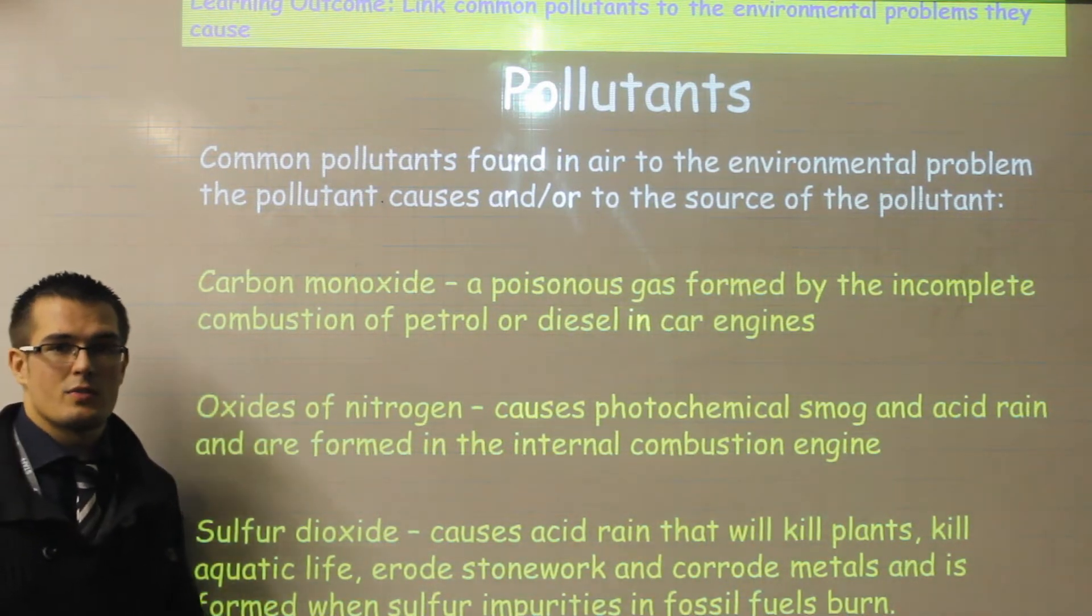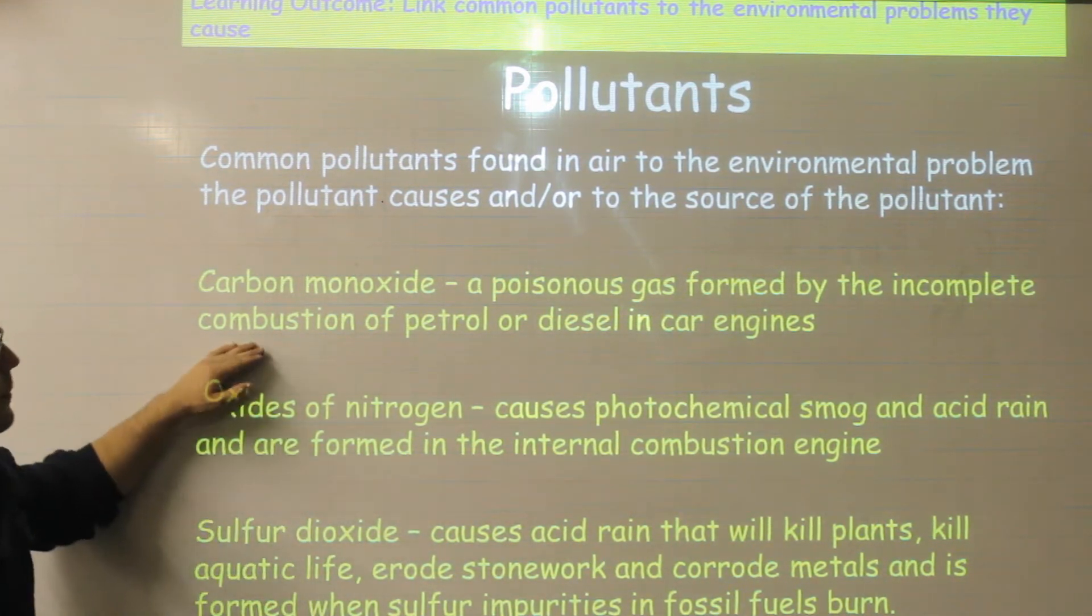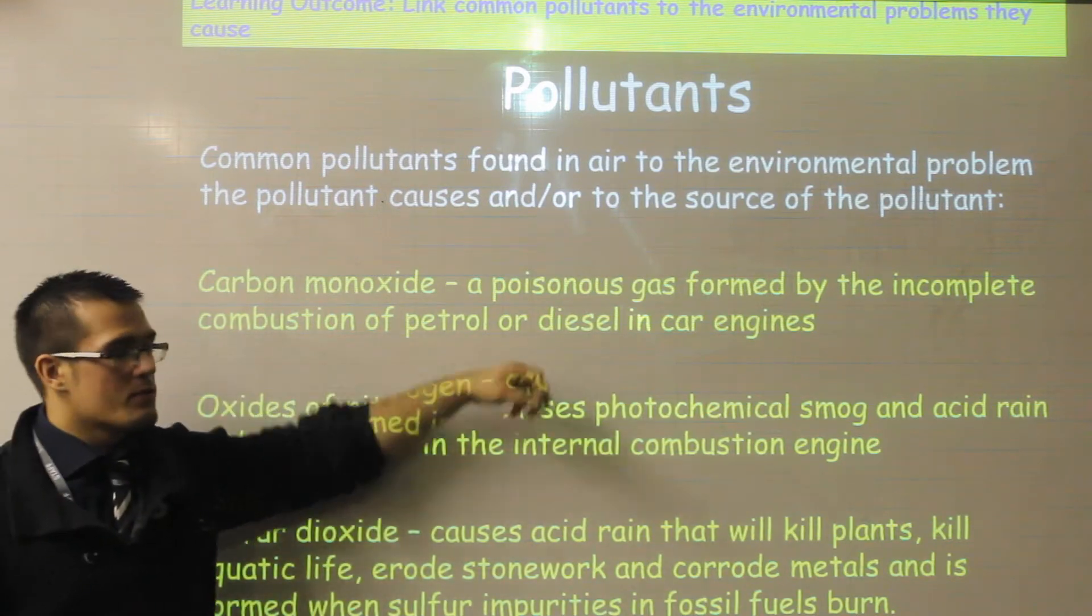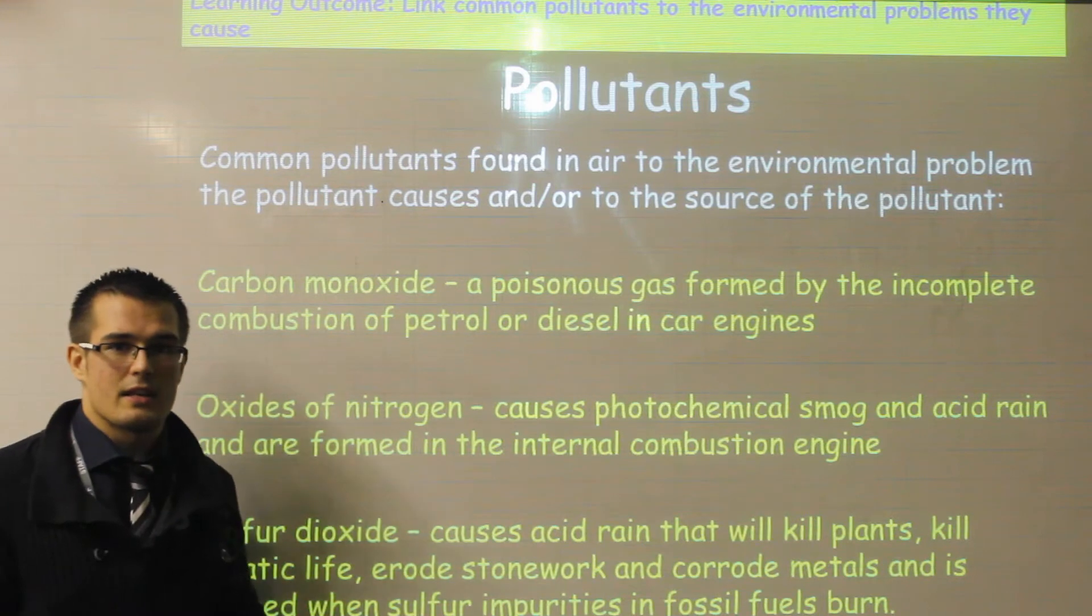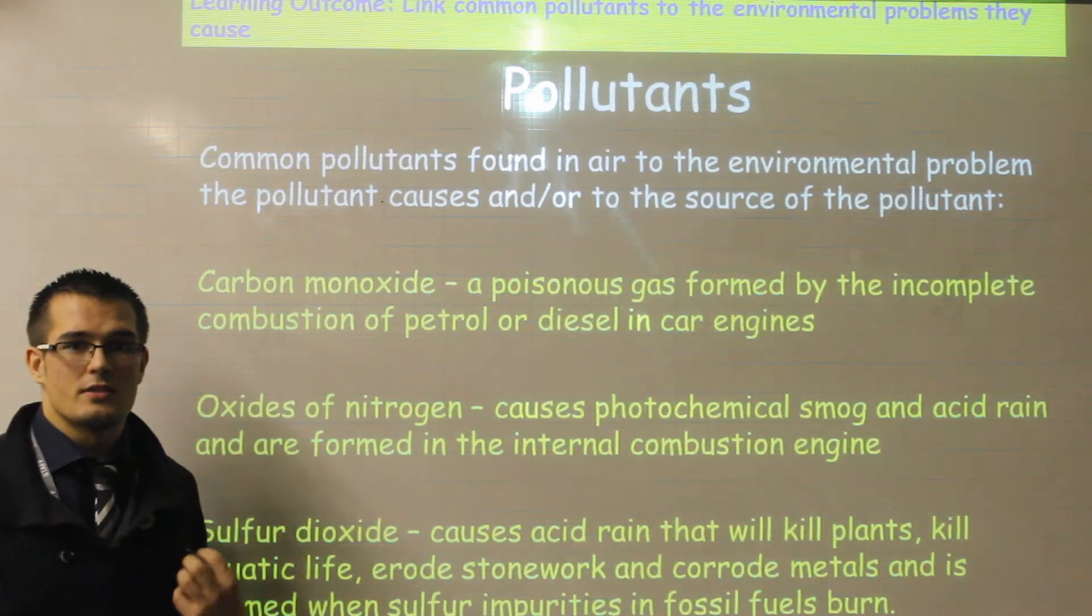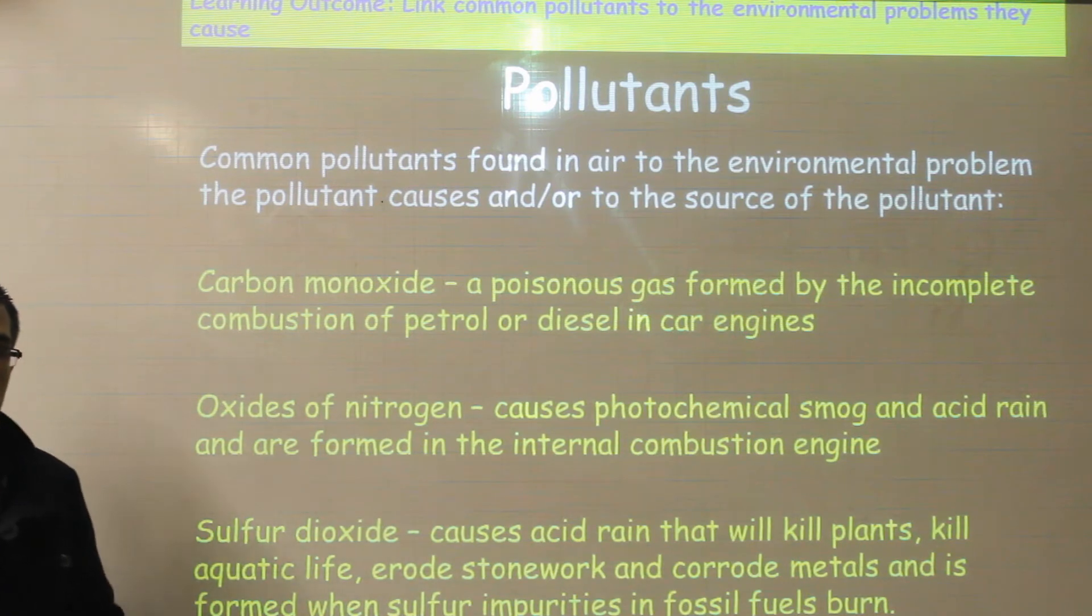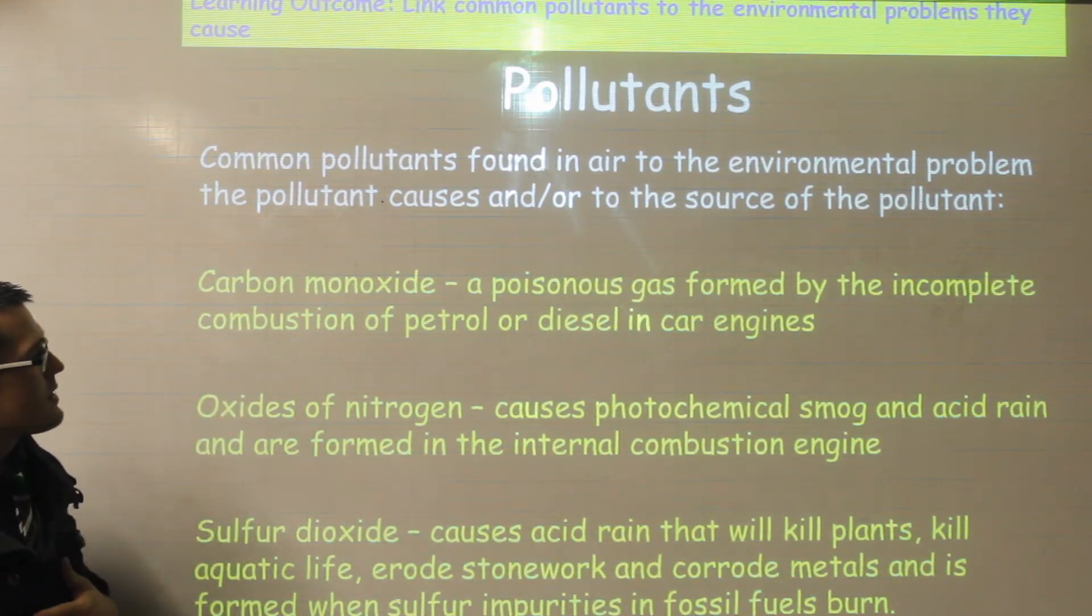There are three pollutants that we need to talk about. The first is carbon monoxide. Carbon monoxide is a poisonous gas which is formed through incomplete combustion. If you remember our last lesson, we talked about methane reacting with oxygen produces carbon monoxide plus carbon plus water. So carbon monoxide is formed from any incomplete combustion reaction.